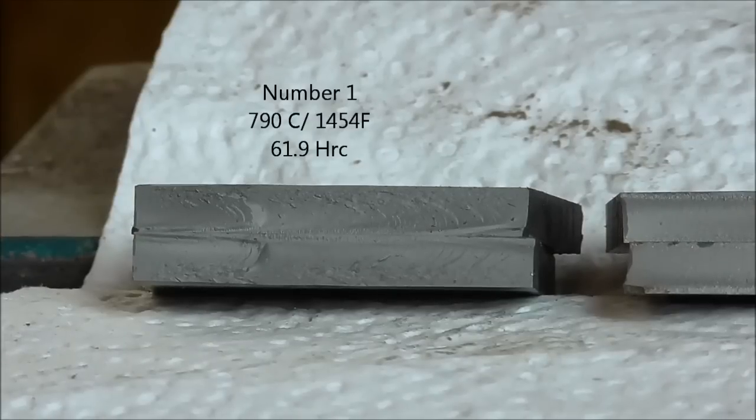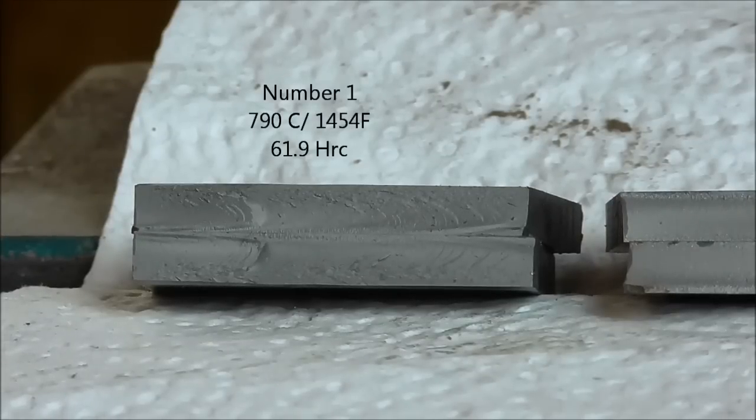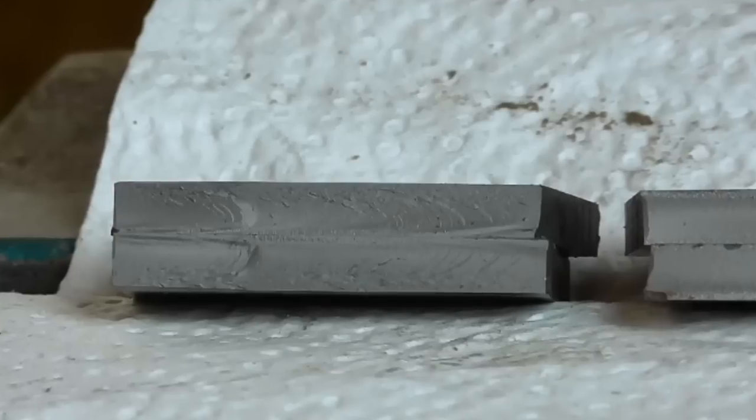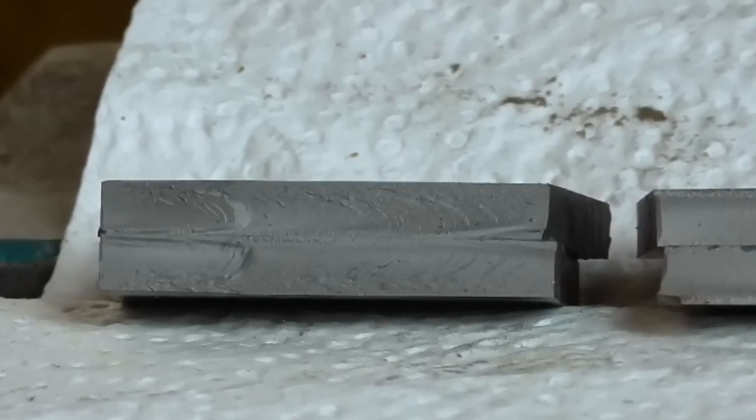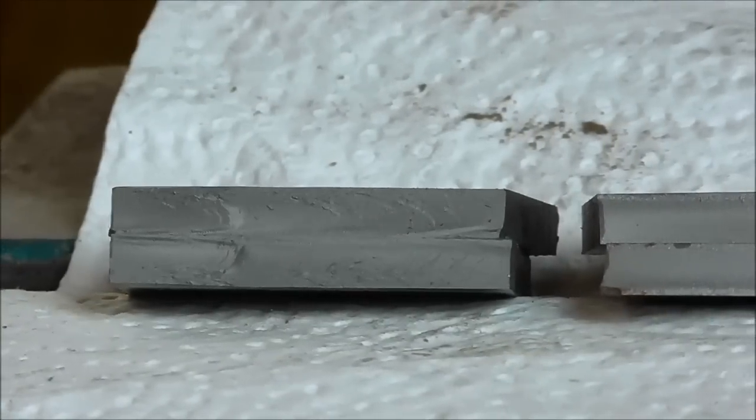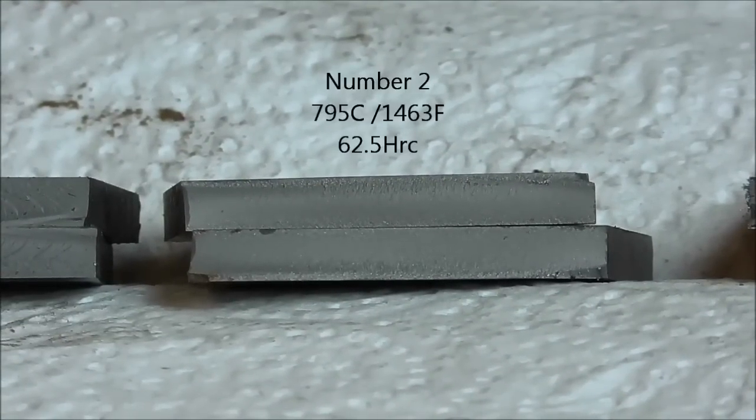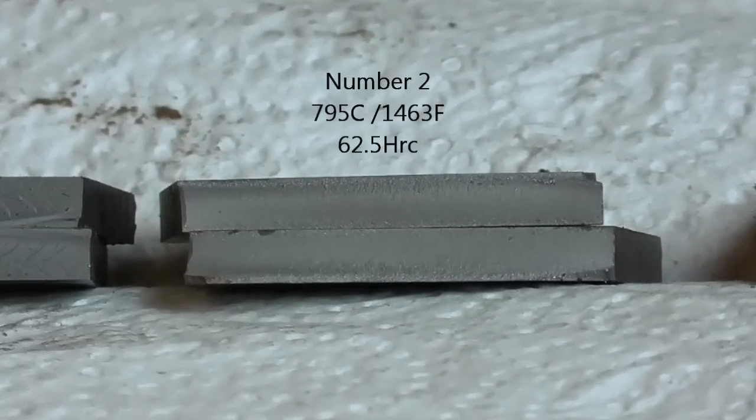The grain structure of all five pieces appeared to be quite fine to the naked eye. However, piece five had the coarsest grain and piece number three snapped the cleanest and appears to have the smoothest grain structure. This was confirmed under a magnifier.